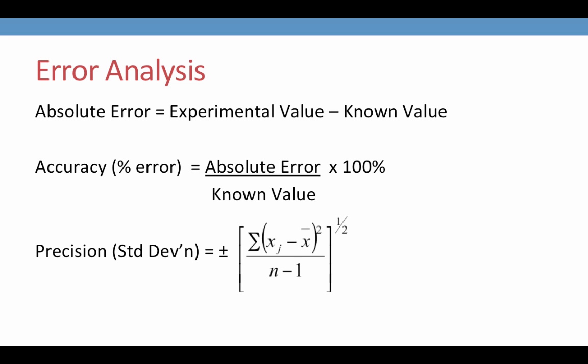Precision is calculated as the square root of the sum of each value minus the average squared, divided by the number of values minus 1. You will apply these calculations to your own data, as well as to the class data.